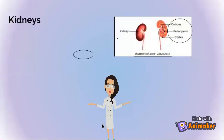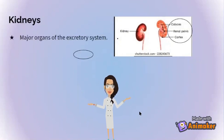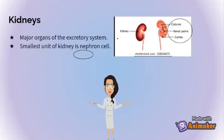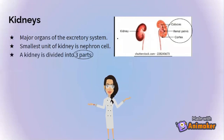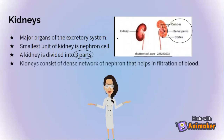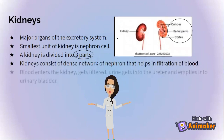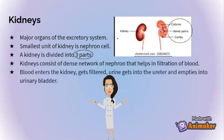Now we'll be learning about the kidneys. The kidneys are the major organs of the excretory system. The smallest unit of the kidney is the nerve frond cell. A kidney is divided into three parts and you can see those three parts in the picture. Kidneys consist of a dense network of nerve frond cells that help in the filtration of blood.